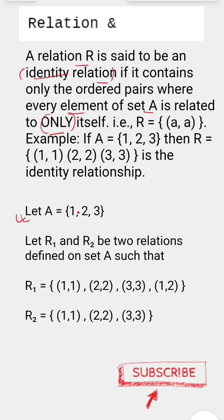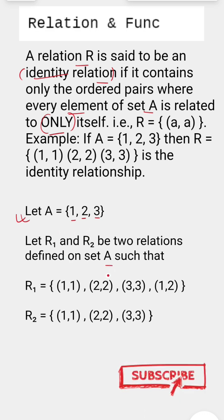Suppose we have a set with three elements: 1, 2, and 3. Let R1 and R2 be two relations defined on set A such that the first relation has four ordered pairs.